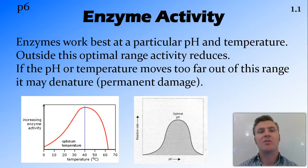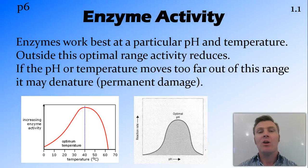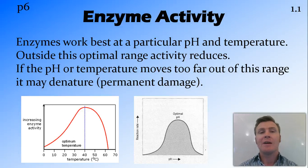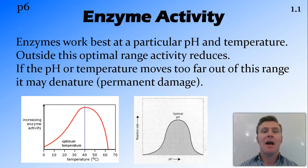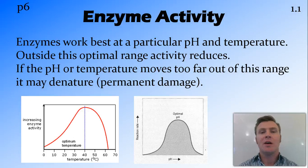Enzyme activity refers to how well the enzyme does its job — how fast it works. Enzymes work best at a particular pH and a particular temperature. Depending on where the enzyme is found in the body, it usually works at a specific pH. For example, enzymes found in the stomach need to be active at a much lower pH than enzymes found elsewhere in the body. However, most enzymes in the human or mammalian body work best at around 37 to 40 degrees Celsius.